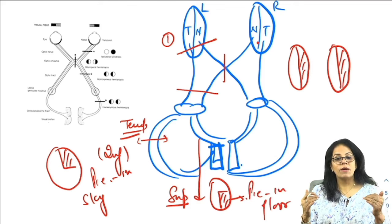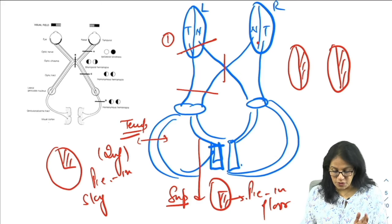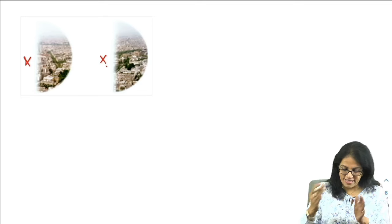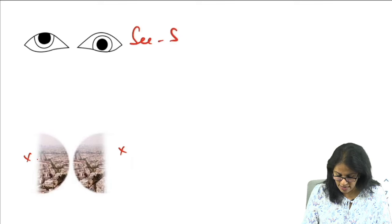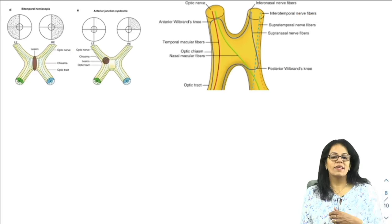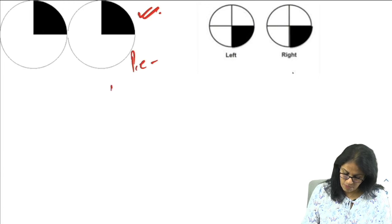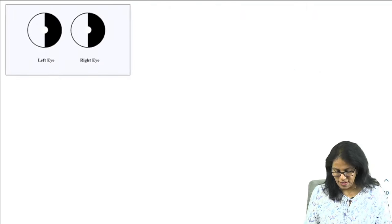More posteriorly in the parietal lobe, you get congruous homonymous hemianopia. For the visual cortex: on the diagram we can see left-sided homonymous hemianopia. We have also discussed bitemporal hemianopia, see-saw nystagmus in previous sessions. Temporal lobe lesion gives pie in the sky; parietal lobe lesion gives pie in the floor.